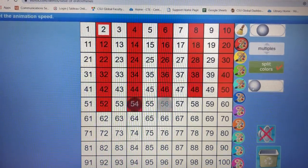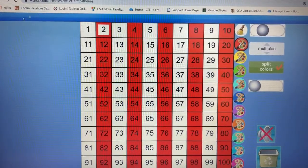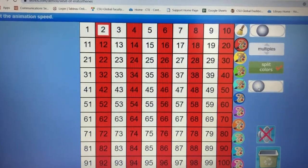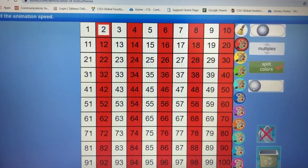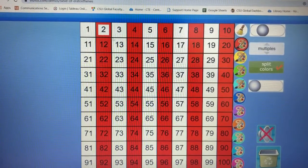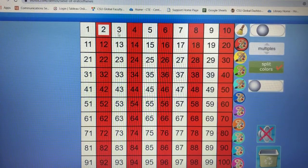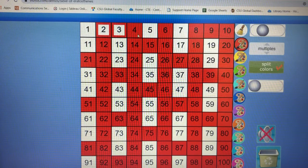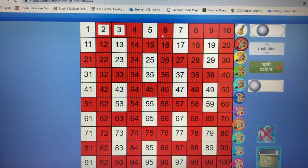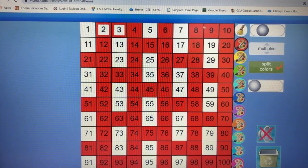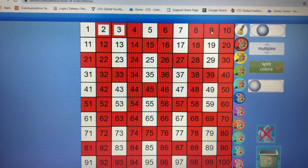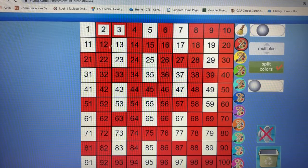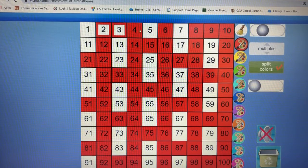This slider here can increase the animation time. Up in the left-hand corner, it says set that animation speed. All the way to the left makes it go really fast. Then I'll click on the next prime number, which is 3, and every multiple of 3 also gets highlighted. So 6 got highlighted because 2 times 3 is 6, 9 because 3 times 3 is 9, 12 because 4 times 3 is 12.